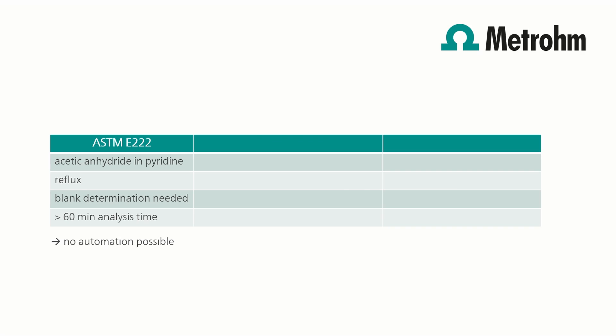On top of that, toxic pyridine is used. Two methods were developed to replace the pyridine and to run the acetylation at room temperature conditions. Because it is unnecessary to reflux the sample, these methods can be automated. The first improved method, described in EN ISO 4629-2, uses 4-N-dimethylaminopyridine as catalyst. However, a blank determination is still necessary. Also, the acid number must be determined first, as it is needed to calculate the hydroxyl number. With an analysis time of about 40 minutes, this method is faster than the original method.